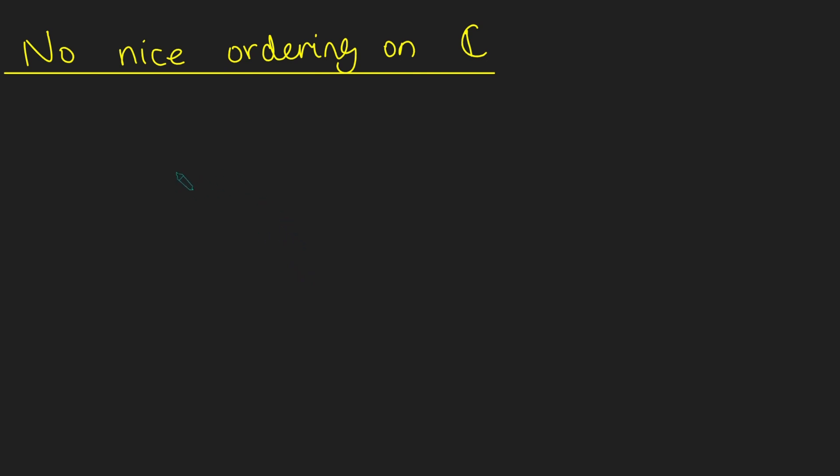Hi, thanks for joining me. Today I'm going to be proving that there's no nice ordering on the complex plane. In other words, there's no way to really define a set of positive numbers on the complex plane. But of course, we can do that for real numbers.